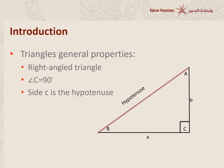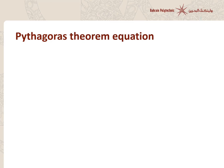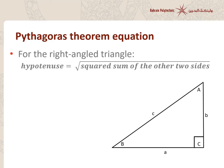The hypotenuse is the opposite side of the right angle and it's the longest side in the right angle triangle. Now knowing all of this information we can talk about Pythagoras' theorem. Pythagoras' theorem can only be applied on a right angle triangle, where the length of the hypotenuse is equal to the square root of the sum of squares of the other two sides.